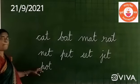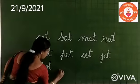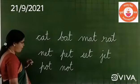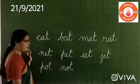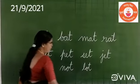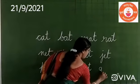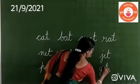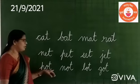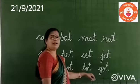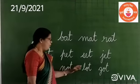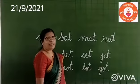Pot. Not, pot, not. Got. See? Pot, not, lot, got. See? The ending sounds are same — 'ot', 'ot', 'ot', 'ot'. Okay?